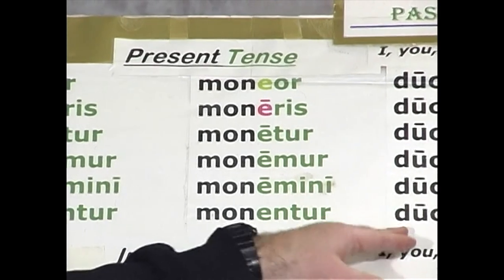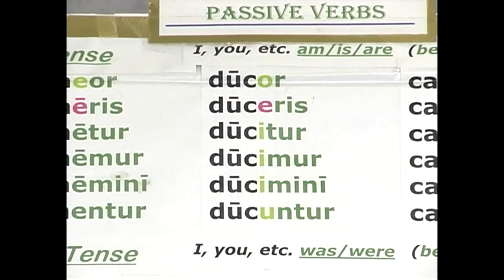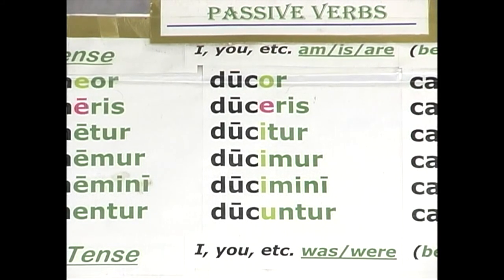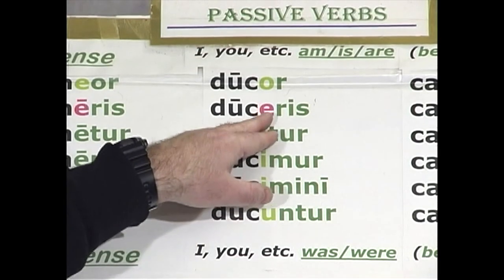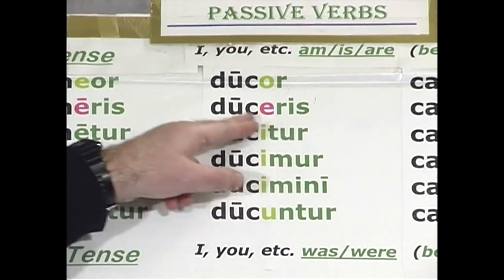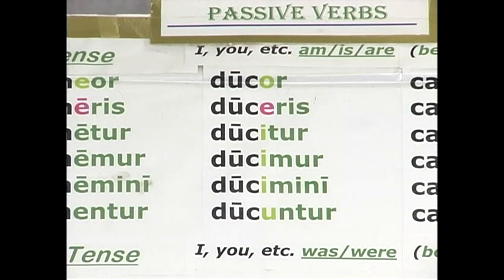For the third conjugation, our model verb is duco, ducere — to lead. It has some irregularities: the standard vowels i, o, u for the present system, but the -i is converted into -e in certain forms. So: ducor, duceris, ducitur, ducimur, ducimini, ducuntur — meaning I am being led, you are being led, he is being led, we, you plural, they are being led.